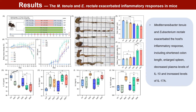In contrast, Eubacterium rectale showed a discrepancy between statistical and experimental outcomes. Statistical analyses indicated a negative correlation with RA, suggesting an anti-inflammatory role, whereas experimental results revealed that Eubacterium rectale promoted inflammation, significantly reducing the cytokine IL-10 while increasing levels of IL-17, IL-2, and IL-12p70. This highlights the necessity of validating results obtained through uncultured analyses with experiments involving cultivable strains.